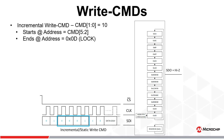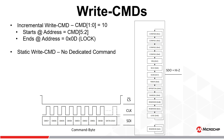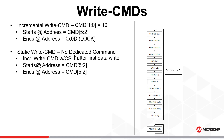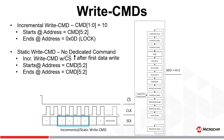Once all register configurations have been completed, the lock register can be written with any value other than A5 to lock the register set and ensure the integrity of the current configuration. If changes to the device configuration are needed, the lock register must be written with the unlocked value of A5 before any changes can be made. A single register write, also referred to as a static write, can be accomplished by sending the incremental write command and then raising chip select immediately following the first data value transmitted. Once the last bit has been received, the write operation is immediately executed.